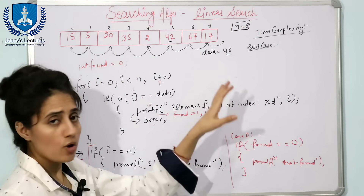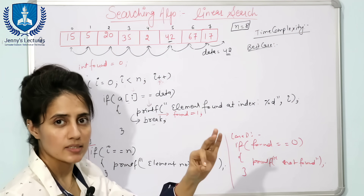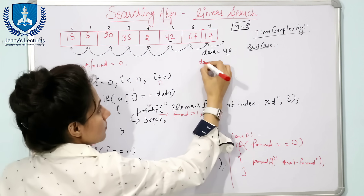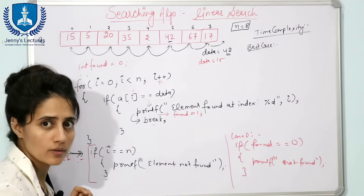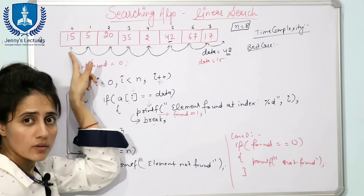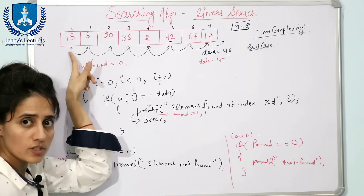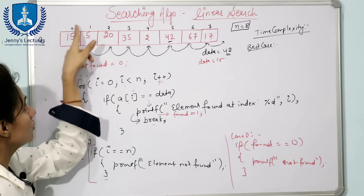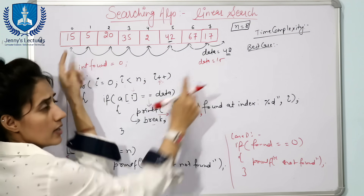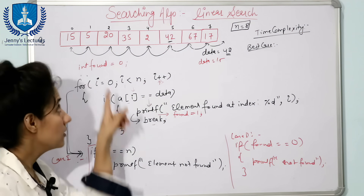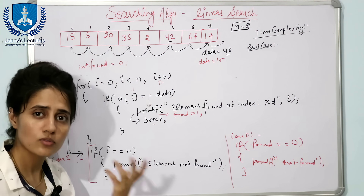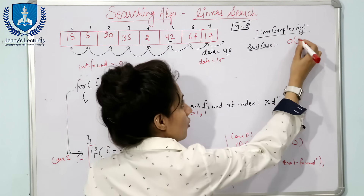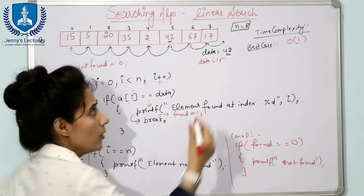Now, time complexity. In the best case, suppose the array has data = 15 and 15 is at the 0th index. In linear search we start from the 0th index and check 15 first — at the zeroth index we find 15, so in one comparison we got the data. Therefore the best case time complexity is O(1).